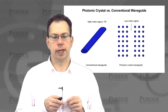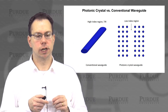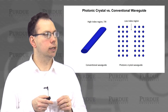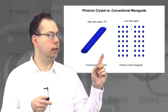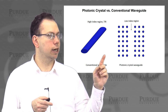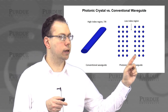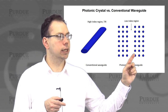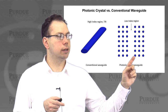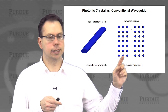This shows an explicit comparison between how guiding works in the two types of waveguides. On the left-hand side is the conventional fiber optic type structure. On the right-hand side, a low-index region — in this case without rods — guides the light instead.